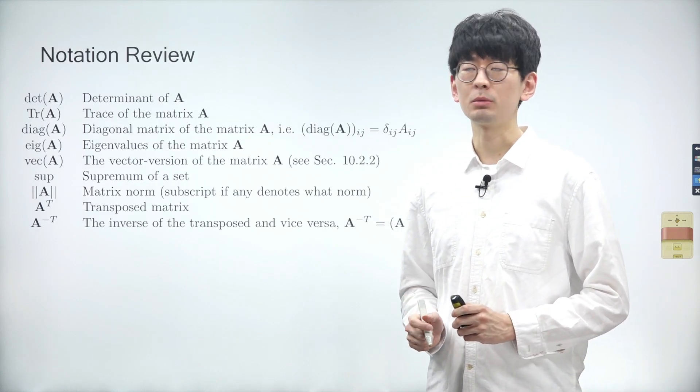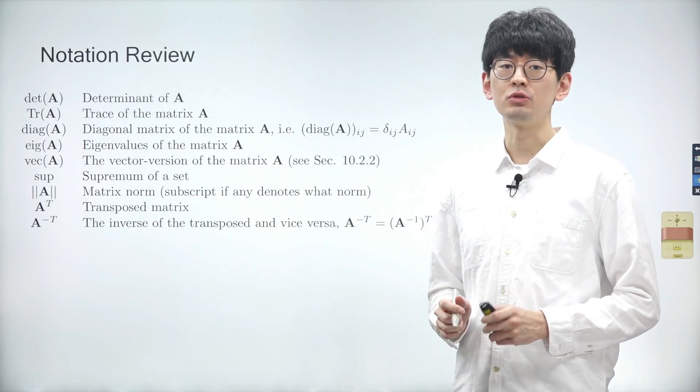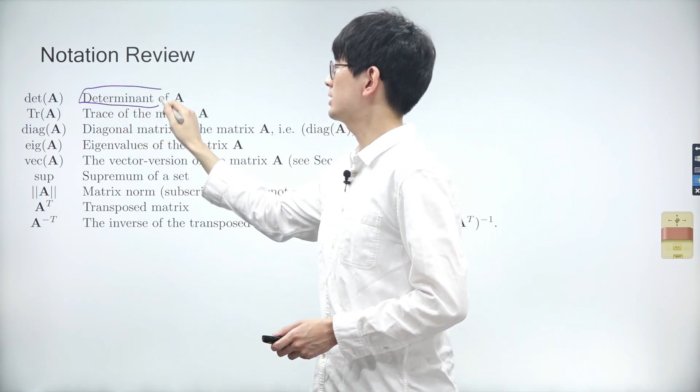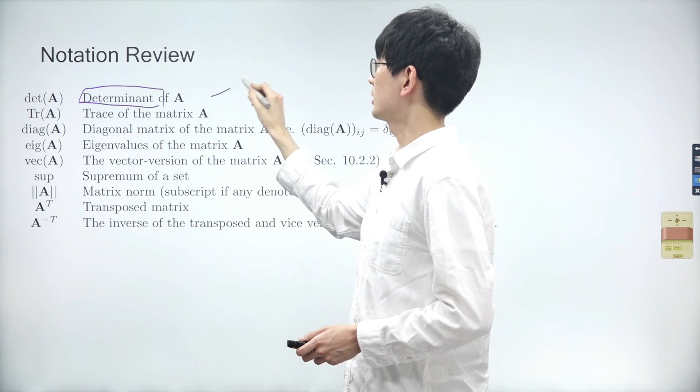Let's review some of the definitions in linear algebra. The determinant of a matrix represents its volume or the change in volume that results from transformation.